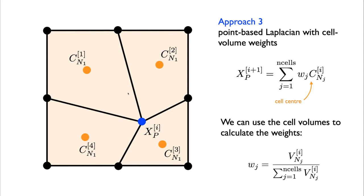What that means is rather than just moving this center point to the average position of the four cell centers, which would be somewhere here, instead we're going to move it a little bit closer to this top left cell because this top left cell has a larger volume. So it's weighting the motion to move towards the larger volume cells.